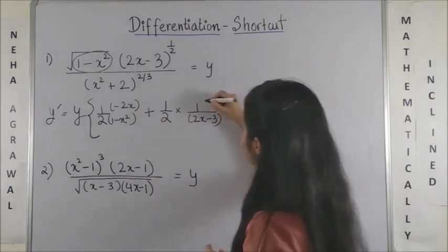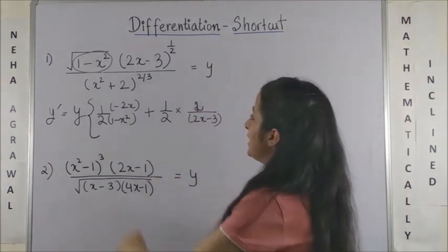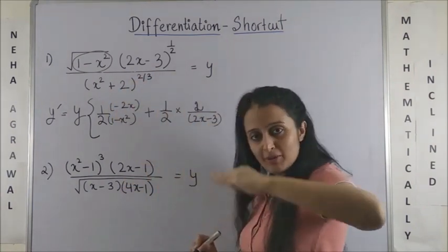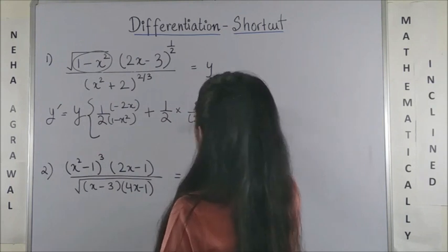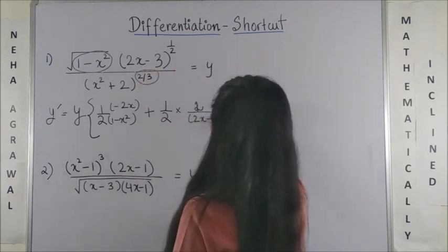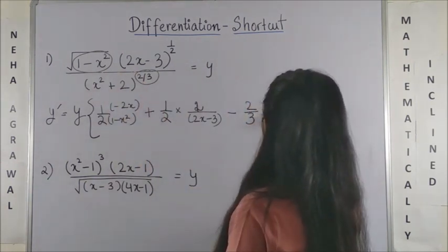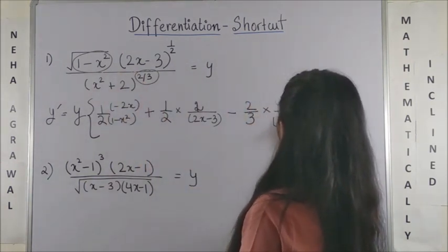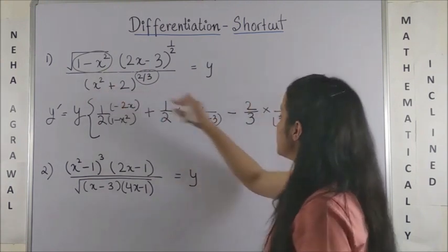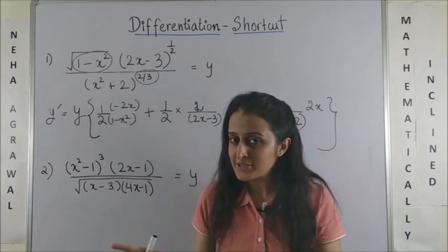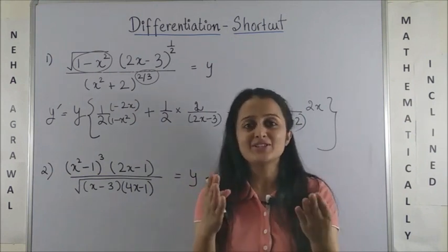And the derivative of 2x minus 3, which would be 2. And finally here, since this number is in the denominator, so minus. Look at the power, copied down as 2/3, 1 upon this expression, and then just differentiate this x² + 2, which is 2x.